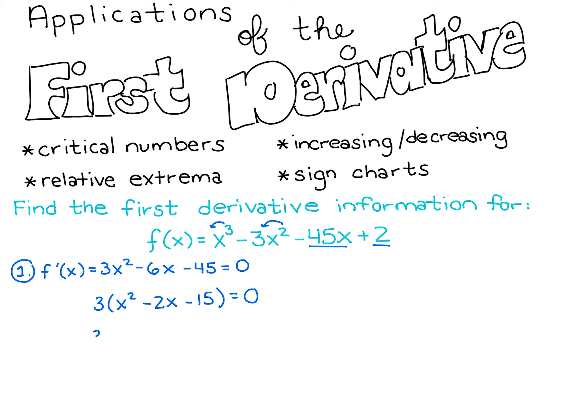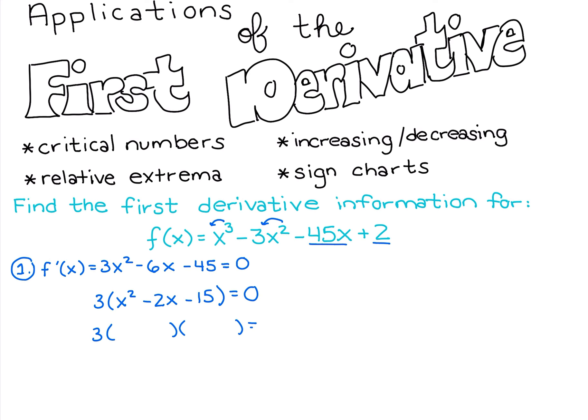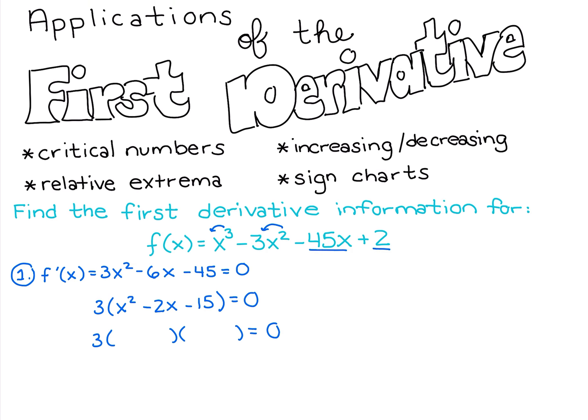To continue factoring, I want to think about what multiplies to be -15 and adds up to be -2. To multiply to be negative 15, I must have a positive times a negative. The bigger factor must be negative for us to add up to -2. So -5 plus 3 gives -2, and -5 times 3 gives -15. So we have 3(x + 3)(x - 5) = 0.